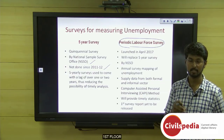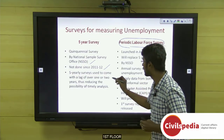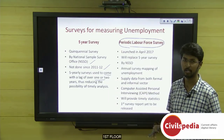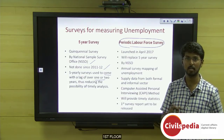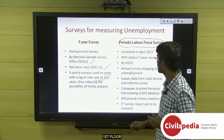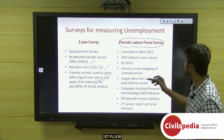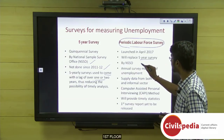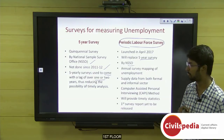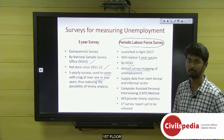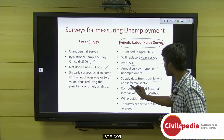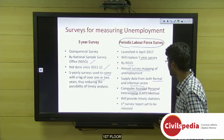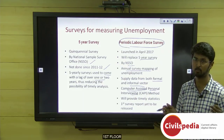The problem with five-year surveys is that they take five years plus one or two additional years to compile data, making the unemployment data outdated by the time it's available. To overcome this, the government introduced the Periodic Labour Force Survey (PLFS), launched in April 2017 by the present government. It replaces the five-year survey, is again conducted by the National Sample Survey Office, and will do annual mapping of unemployment in both formal and informal sectors using the CAPI (Computer Assisted Personal Interviewing) method.